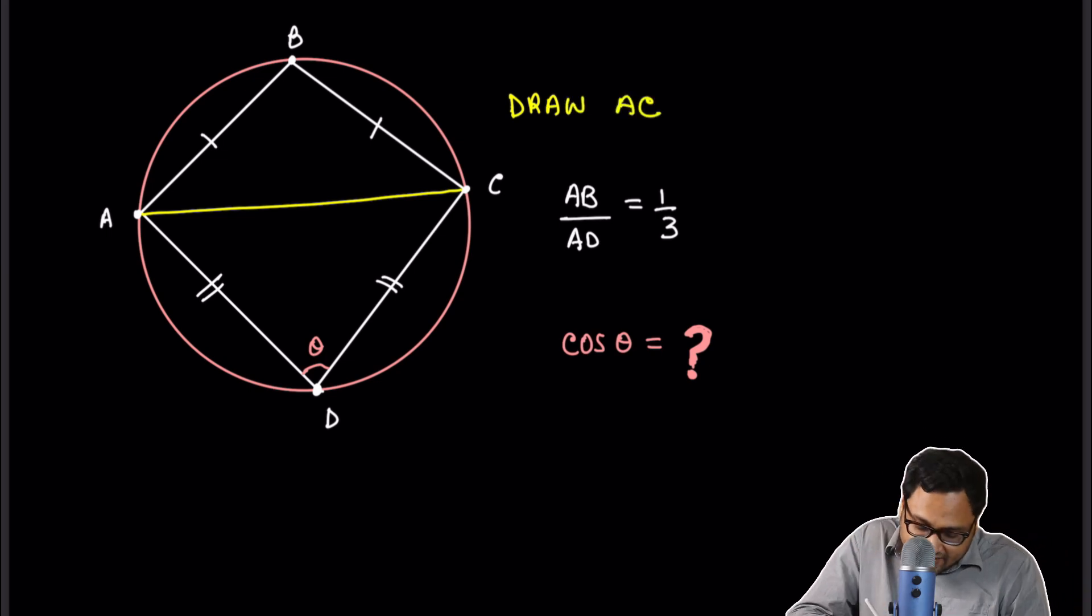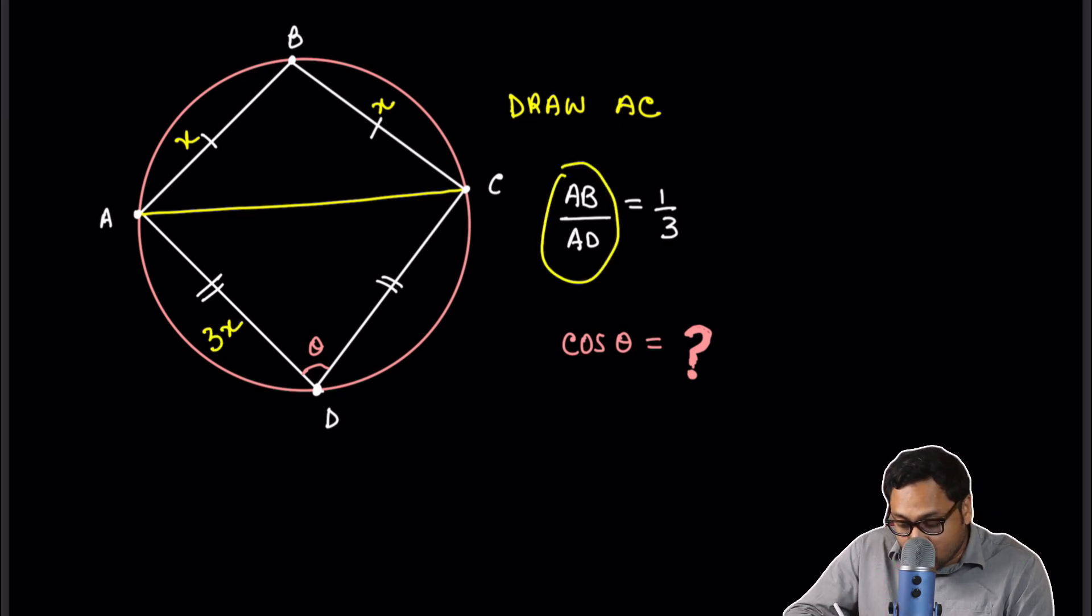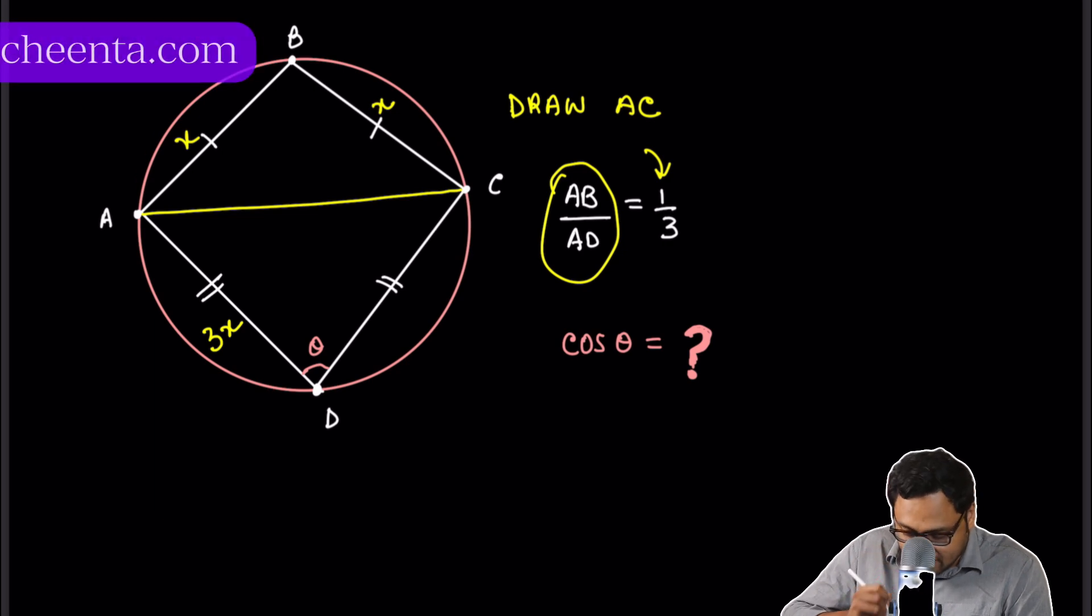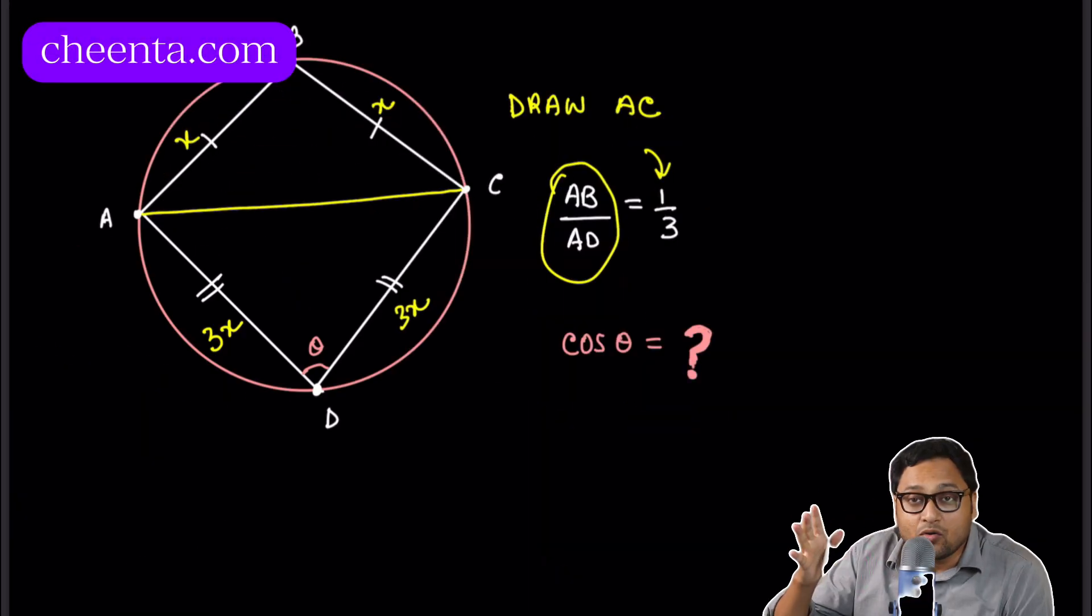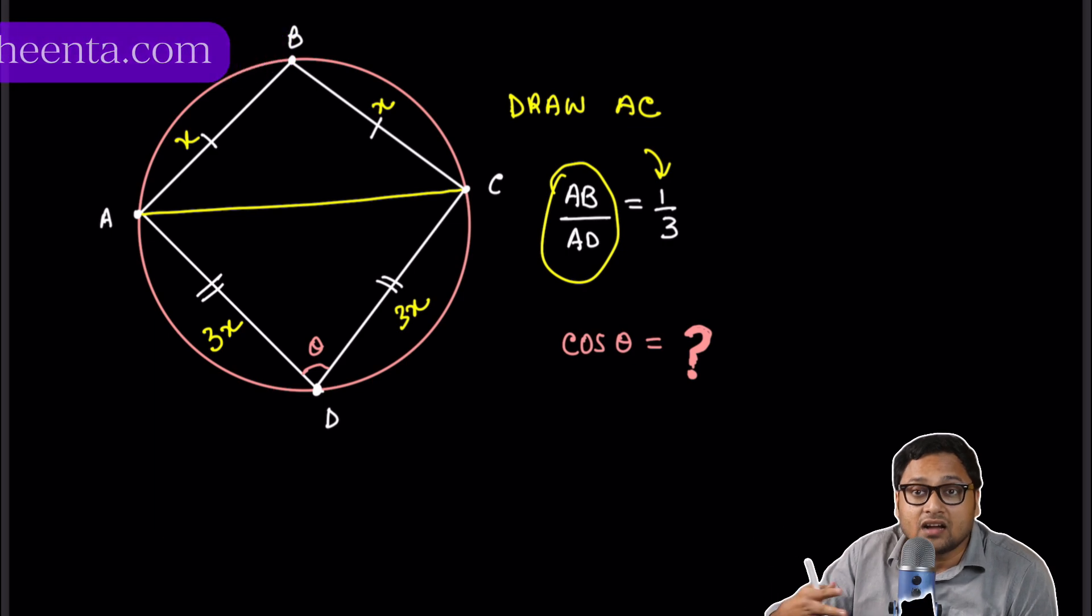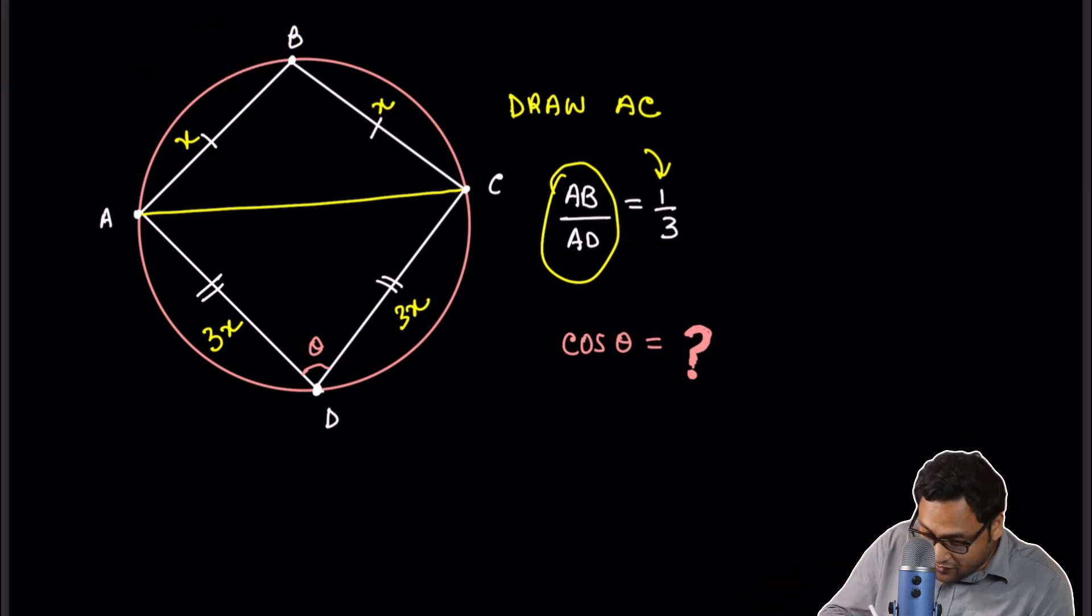And suppose AB is X, then BC is also X. Then AD is 3 times X. We know that AB over AD is 1 third. I'm using this fact. And DC is also 3 times X. Now we are ready to use the cosine rule from this direction and from this direction.